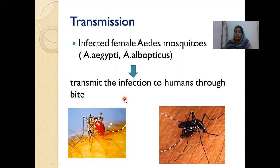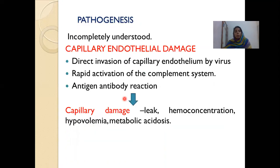A point to note here is these mosquitoes, once they are infectious, remain infectious throughout their life. That is why we have to take adequate measures to contain or kill these mosquitoes — either by using mosquito nets or larvicides. They also transmit the infection to their offspring; that is, trans-ovarial transmission is noted. An infected mosquito can transmit the infection to its offspring, which is very dangerous.